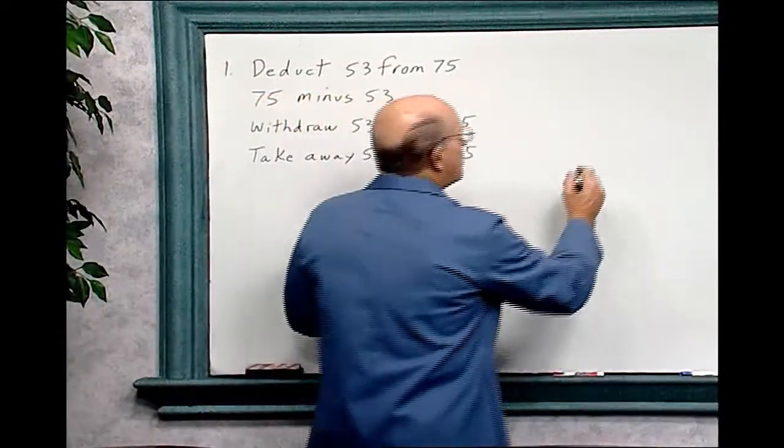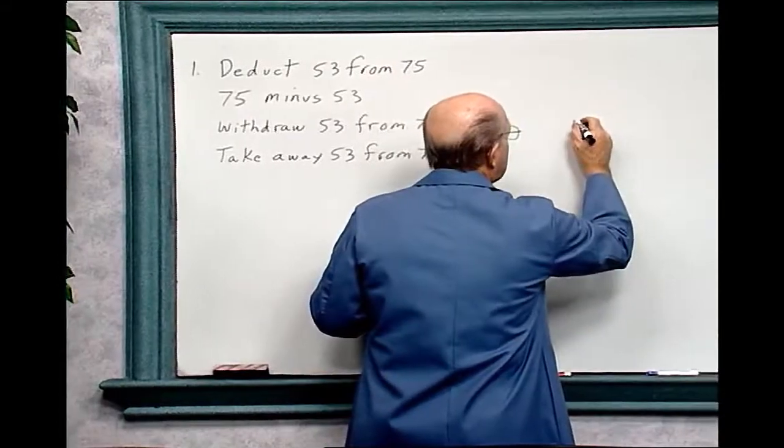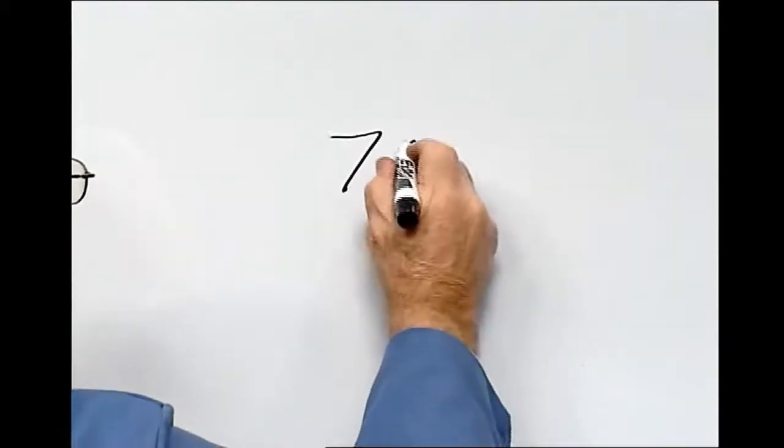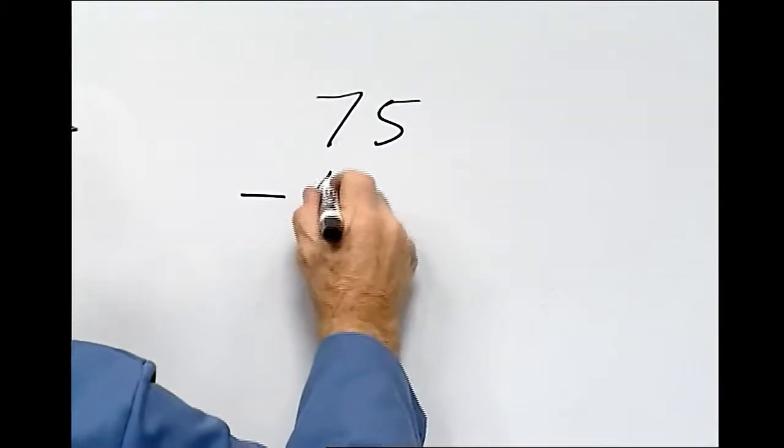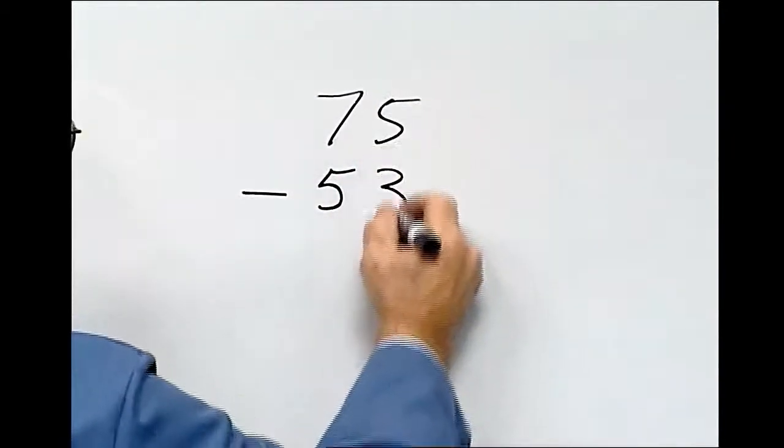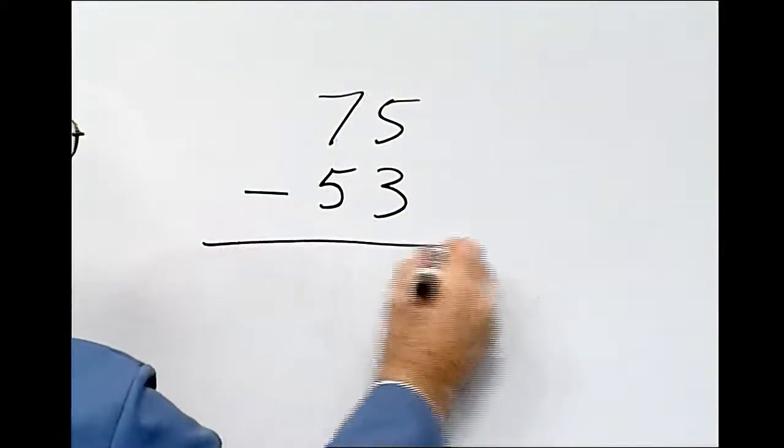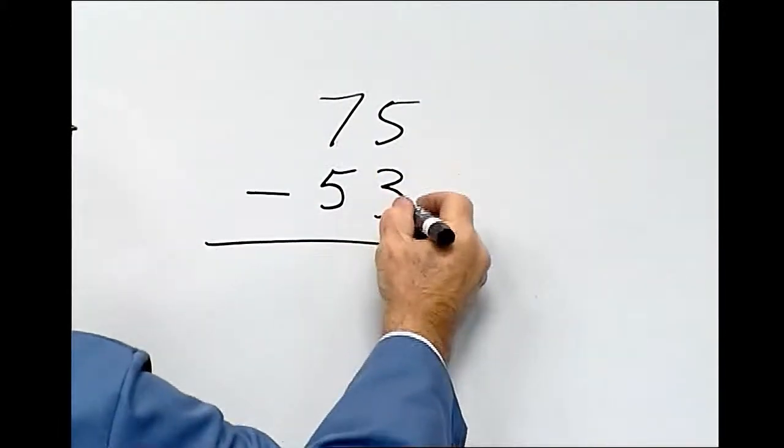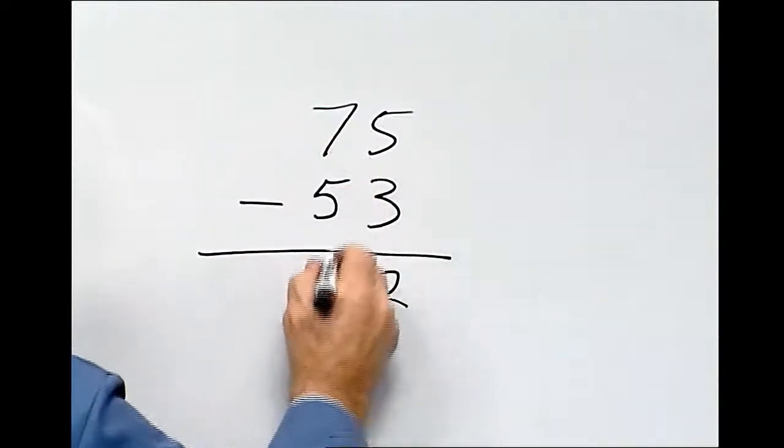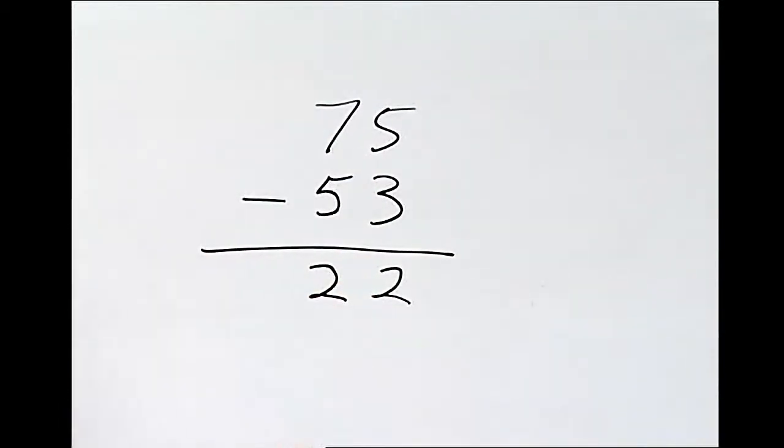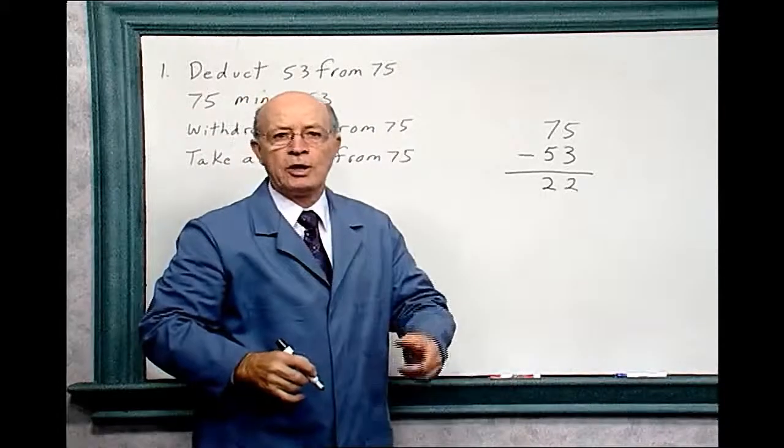Let's do the problem. Remember write neatly. 75, and we're going to deduct 53. So that's minus 53. Always write in straight columns. All right. Three from five is two, and five from seven is two. So the answer is 22.